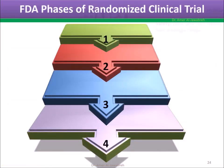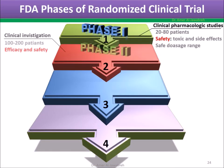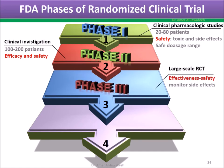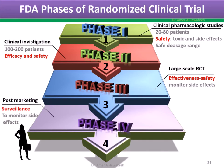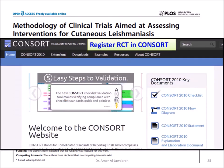Phases of RCT: Phase 1 — limited number for safety. Phase 2 — larger number for efficacy and safety. Phase 3 — large scale, for effectiveness and safety. Phase 4 — post-marketing surveillance. RCT should be registered before the start.